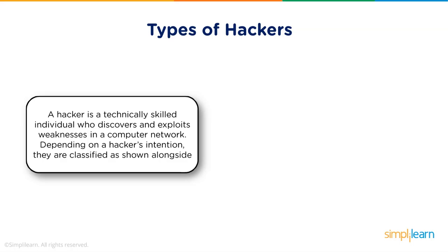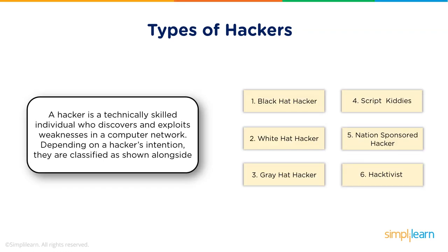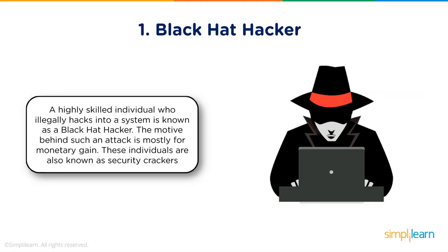Before going into ethical hacking, let's understand the types of hackers. A hacker is a technically skilled person who is adept with computers — they have good programming skills, understand how operating systems and networks work, and know how to identify and misuse flaws to achieve outcomes detrimental to an organization. There are six types of hackers: black hat, white hat, gray hat, script kiddies, nation-sponsored hackers, and hacktivists. Black hat hackers are malicious hackers with criminalistic tendencies who want to harm organizations and gain monetarily — they are also known as crackers.